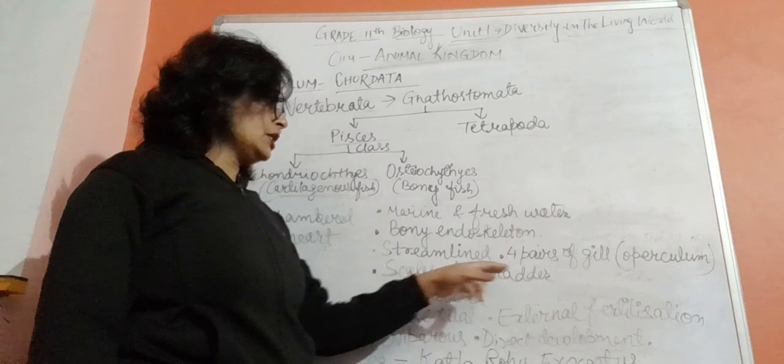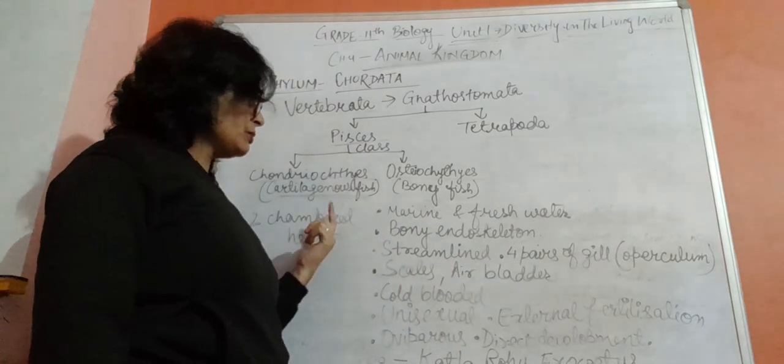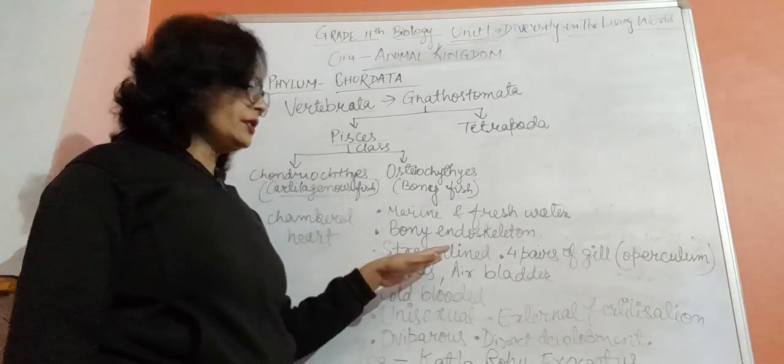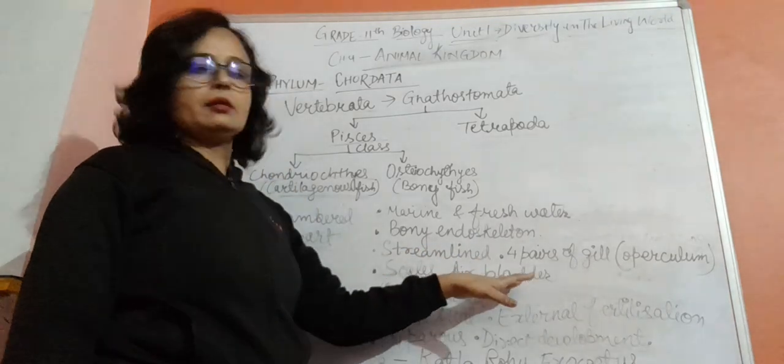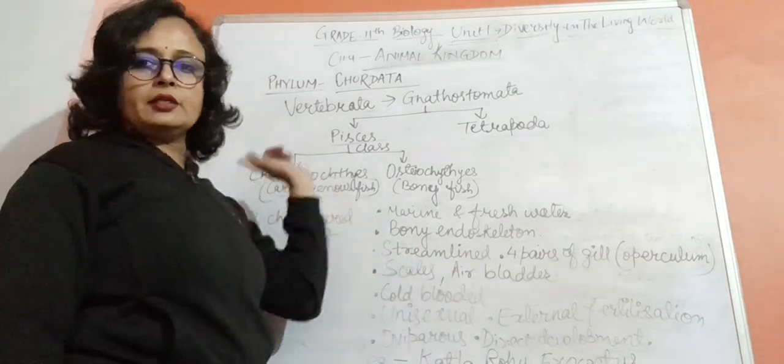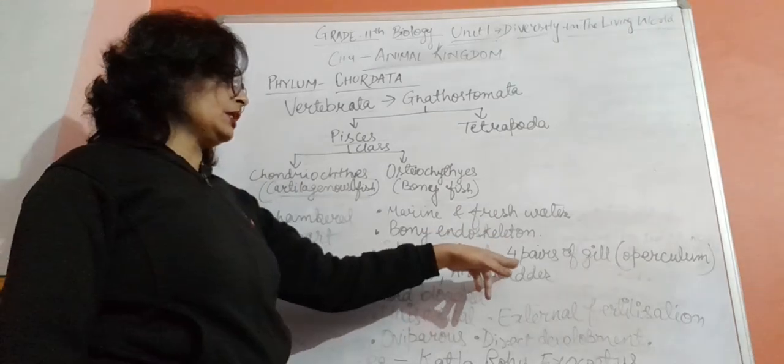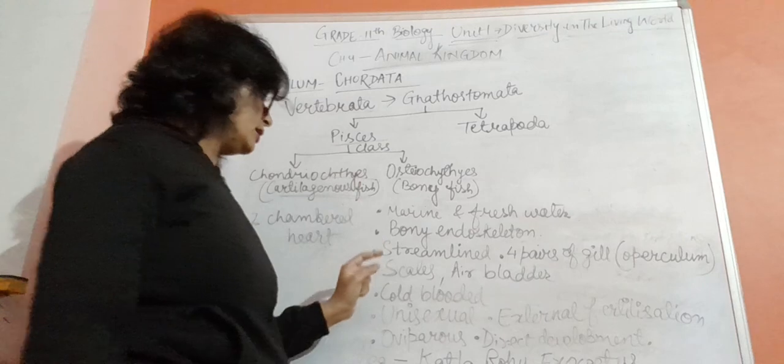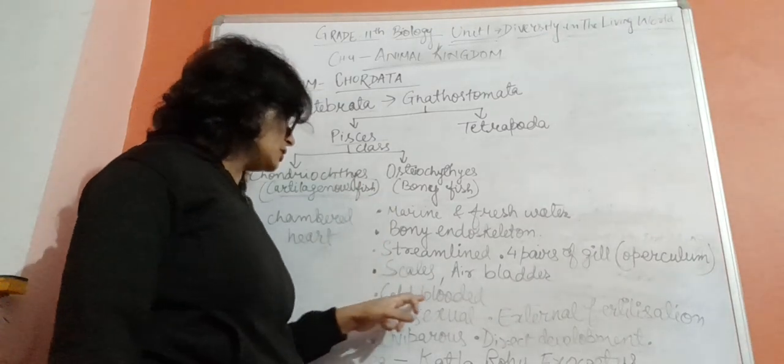Scales and air bladder are found in Osteichthyes. The type of scale is different - in Chondrichthyes it was very hard, here it is softer. Air bladder is present, which helps in swimming, so they don't have to swim continuously. These are also cold-blooded.